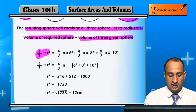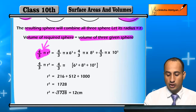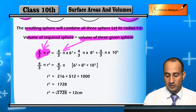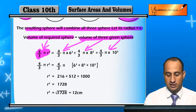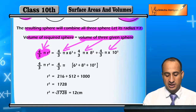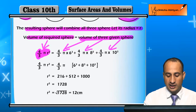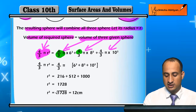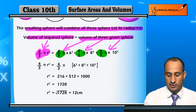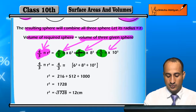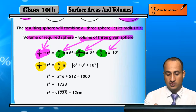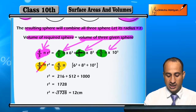The volume of the three given spheres uses radii 6, 8, and 10 cm. We write 4/3 π on each side: 4/3 π on the left-hand side and 4/3 π for each of the three spheres on the right-hand side. Since 4/3 π appears on both sides, it cancels completely.